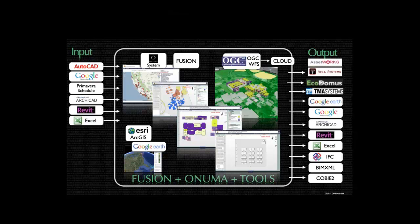We've used this diagram to explain some of the tools being used. It's not about the tools or the technology — it's really about connecting people and decisions; tools are just like paper and pencil. Think of BIM as not just software — software is part of it, but the process and the connections between different tools matter. In the middle is what we call Onuma tools, cloud computing-based tools. We connect to Fusion, the California Community College Foundation system for managing facilities.